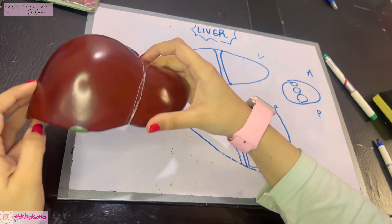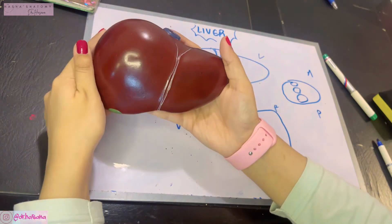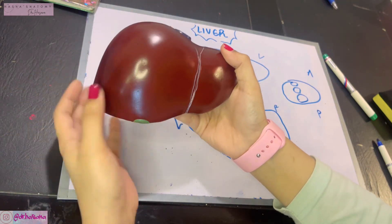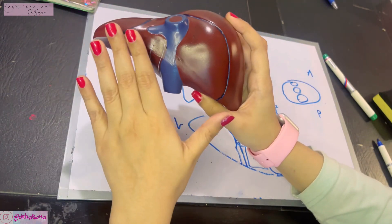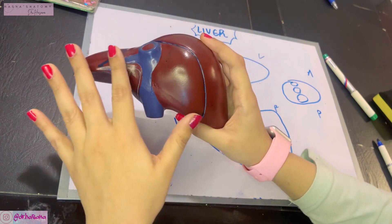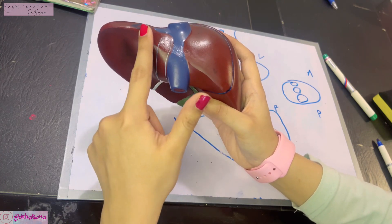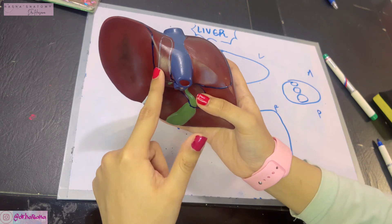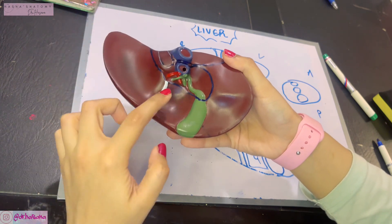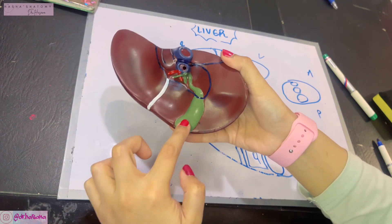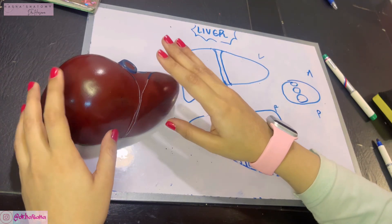Now we can label things quickly. This is the right lobe, which is always a little lower. This is the left lobe. Going to the posterior surface, we can see the bare area of the liver, the groove for the inferior vena cava, and to its left is the caudate lobe. To the left of the caudate lobe is the ligamentum venosum fissure. On the inferior surface we have the porta hepatis, beneath which is the quadrate lobe; to the right lies the fossa for the gallbladder, and to the left is the ligamentum teres fissure.